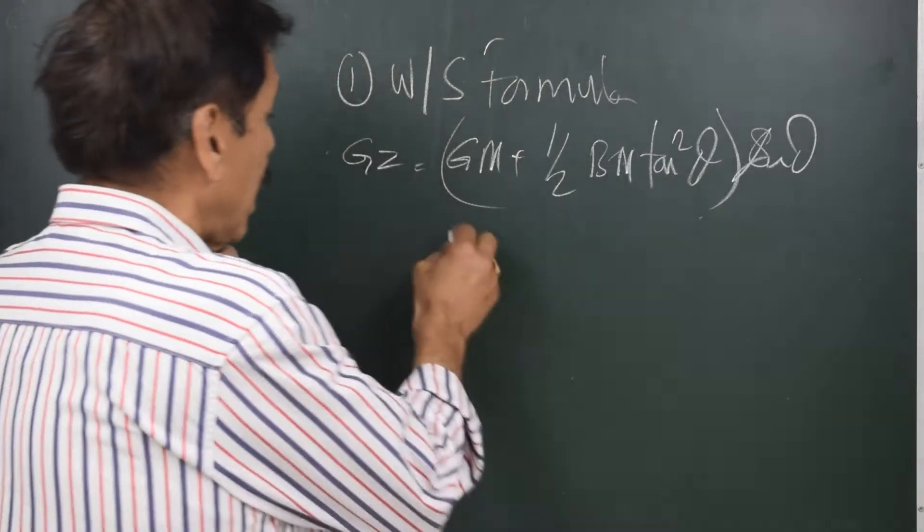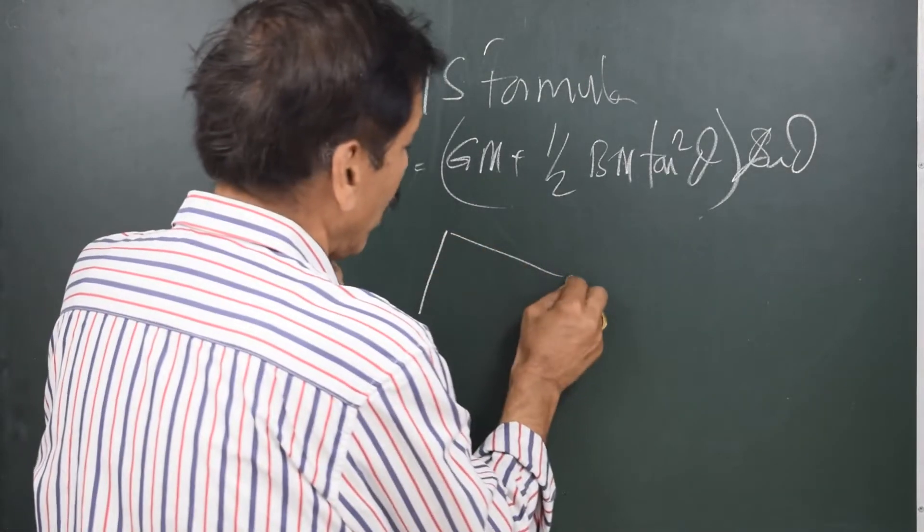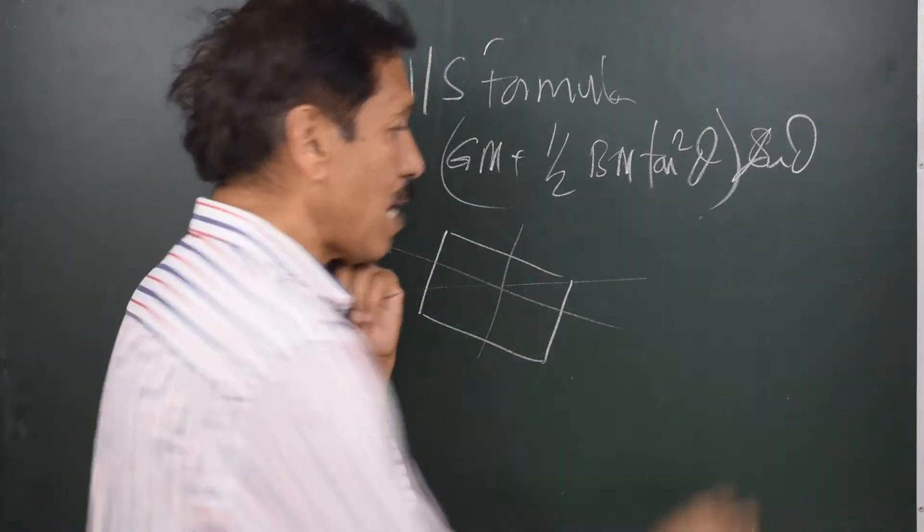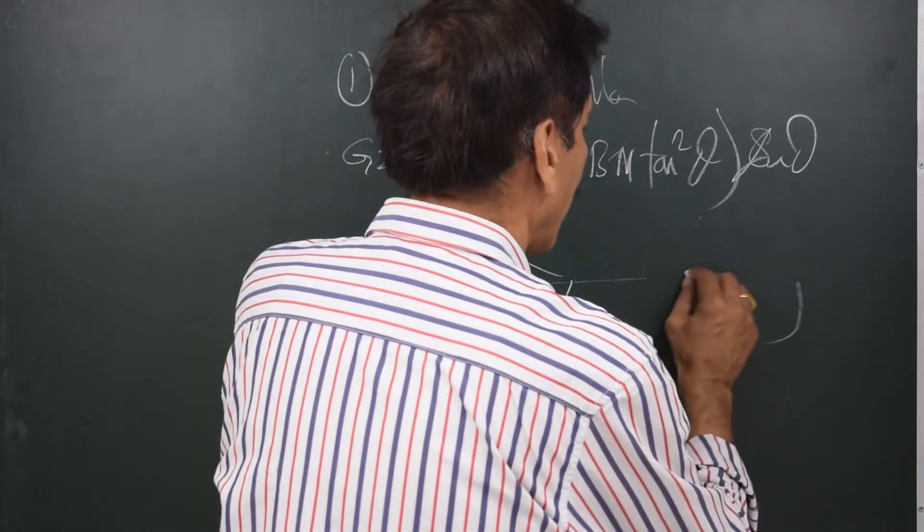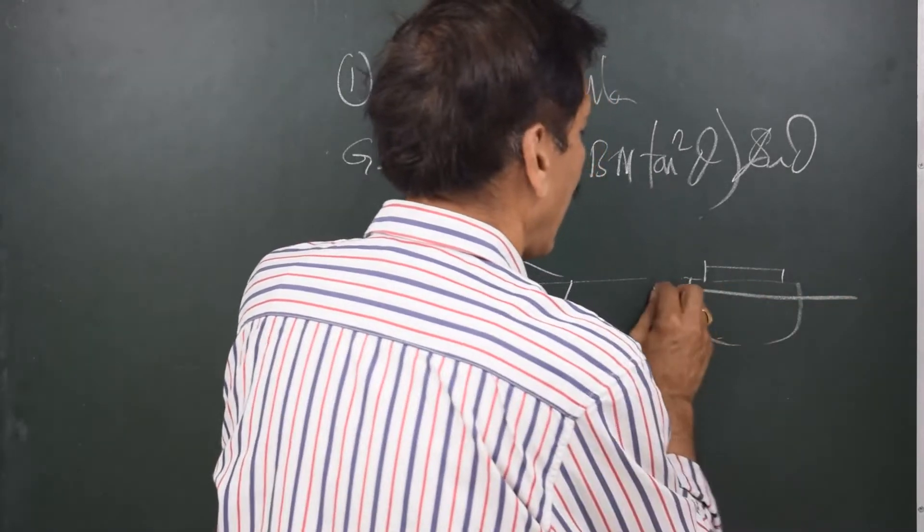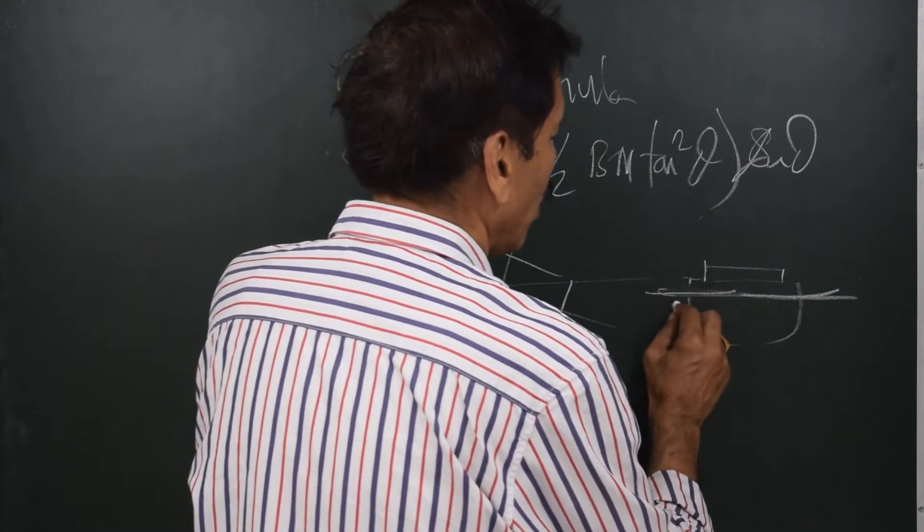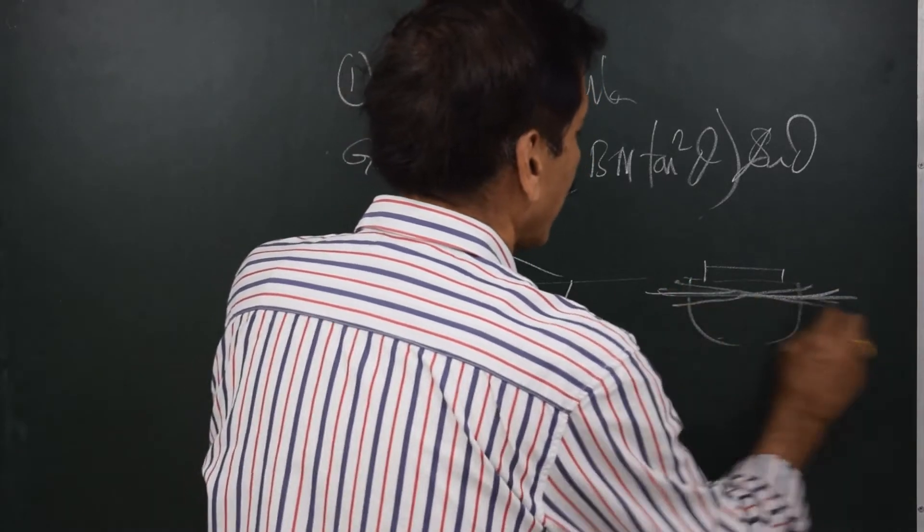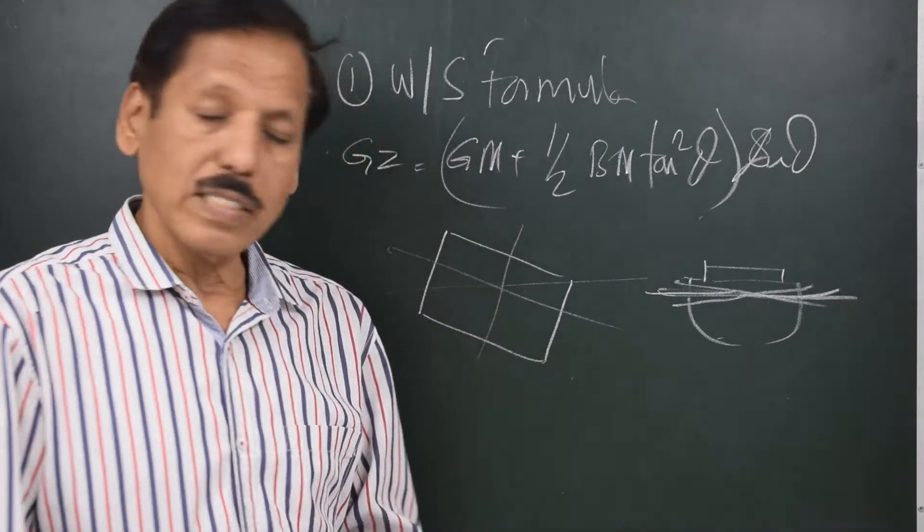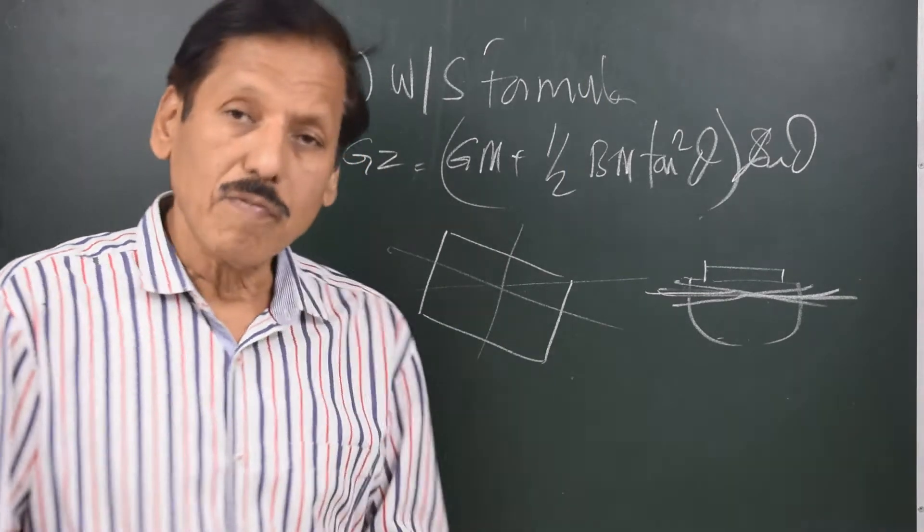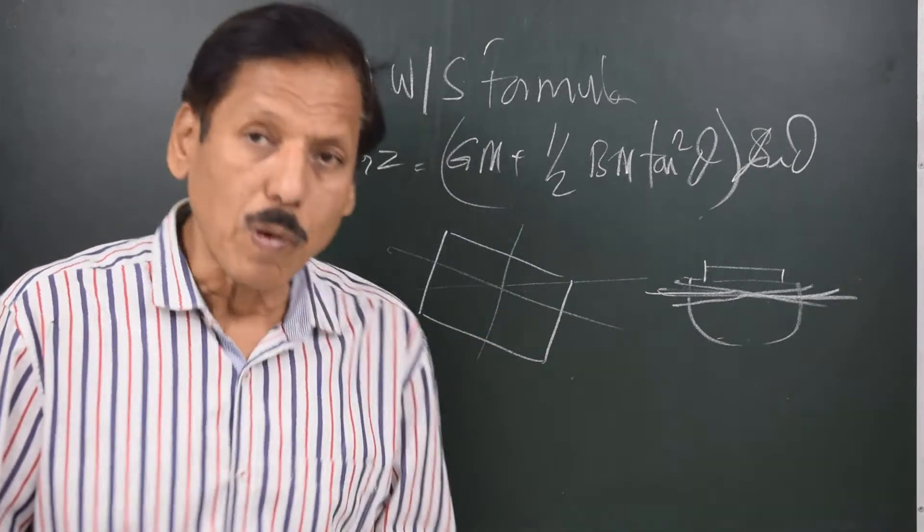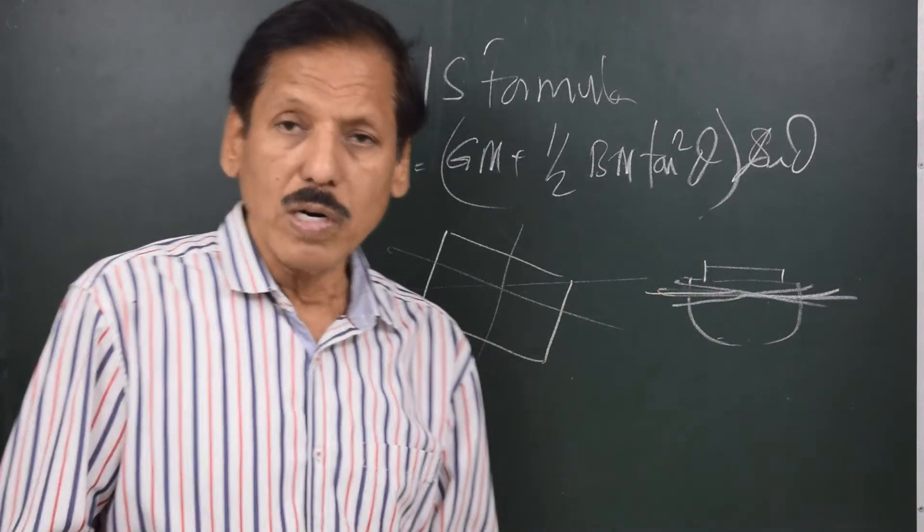Now the thing is wall-sided formula should be used only till the deck has immersion, even if it is a box vessel. For that matter even if it is a ship-shaped vessel and if you are talking about the load draft at higher drafts, you might use the wall-sided formula till the deck has immersion. What is more important is the wall-sided formula should not be used beyond the deck edge immersion, up to deck edge immersion. The wall-sided formula can definitely be used for box vessel and with some accuracy or with some approximation it can also be used for the loaded vessels.